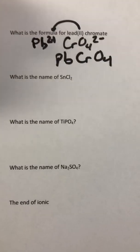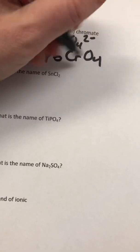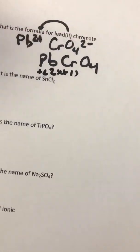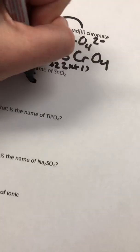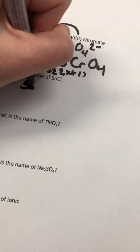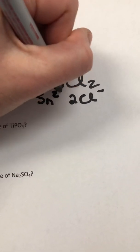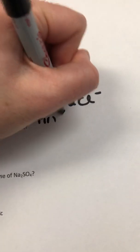Now naming from a formula: SnCl2. You might not know tin's charge right away, but we know chlorine's charge is negative one when it's chloride. There are two chlorines, so two times negative one equals negative two. That means tin must be positive two. Breaking it down: two Cl-minus ions plus one Sn that must be 2-plus. That's why this is tin(II) chloride.